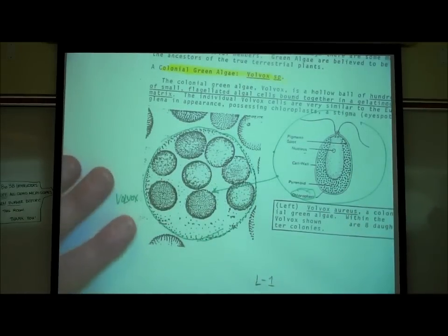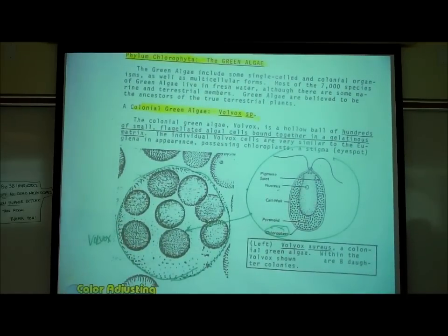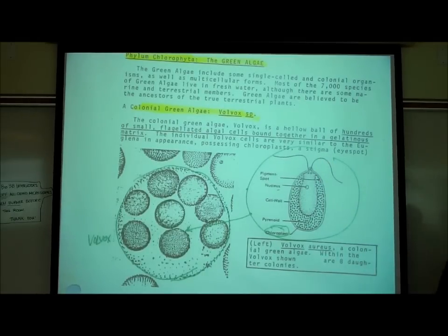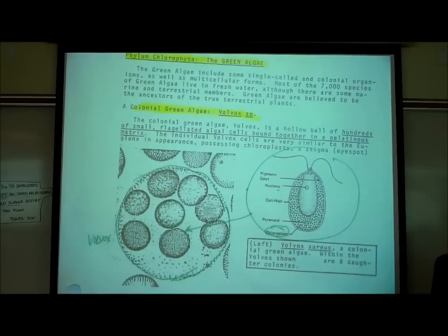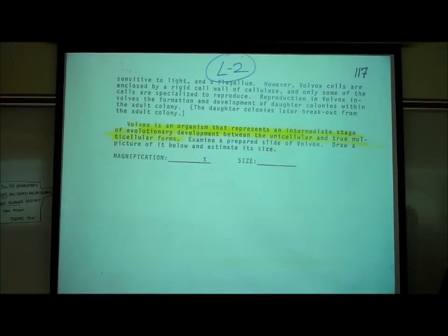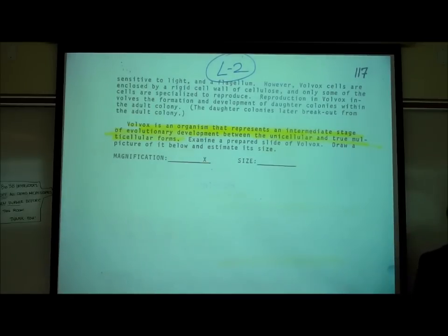Why this volvox organism is considered very interesting to evolutionary biologists - I describe this organism as a ball of hundreds of small flagellated algal cells that are bound together in a kind of gelatinous matrix. This is especially interesting to evolutionary biologists because they kind of think that maybe this is some sort of intermediate step on the way between single celled organisms and true multicellular organisms. Volvox is an organism that maybe represents an intermediate stage of evolutionary development between unicellular and true multicellular organisms.